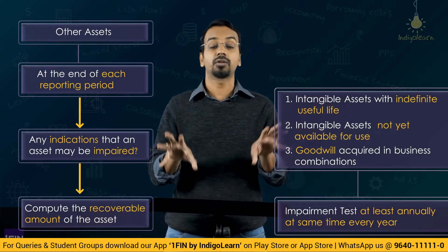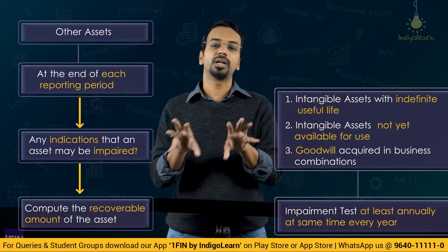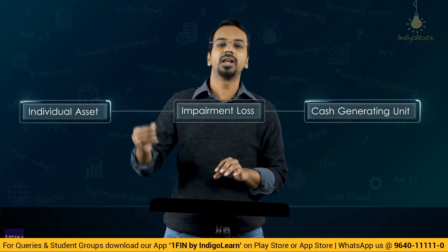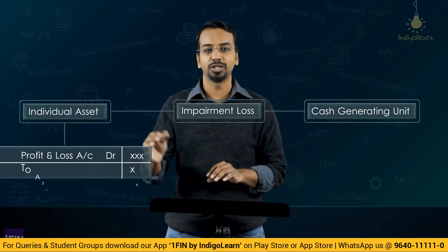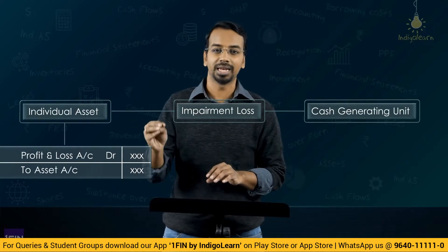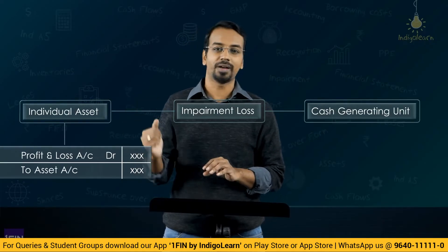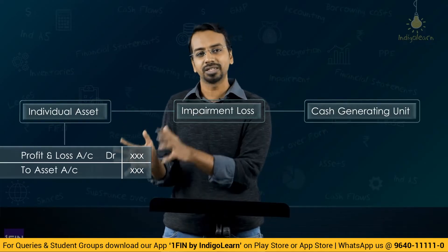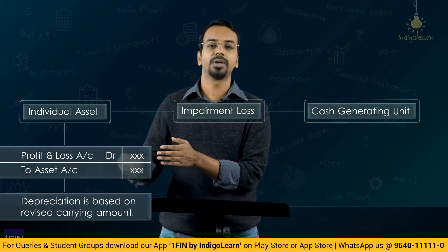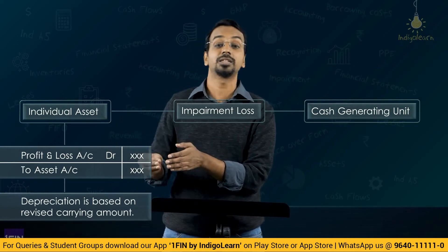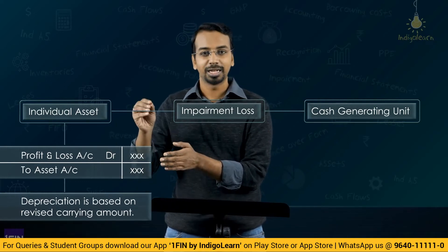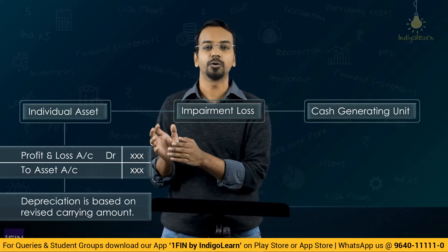If there is an impairment loss for an individual asset, we will recognize that impairment loss in the P&L — you will debit the P&L and credit the respective asset. After this, the depreciation amount will be based on the revised carrying amount, and you will also have to re-estimate the remaining useful life and the residual value.